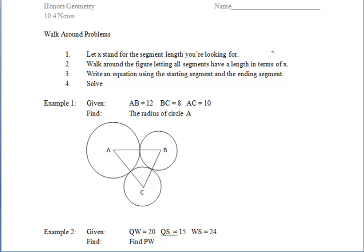In the second set of notes on section 10.4, we will be discussing two different types of problems. The first problem is called the walk-around problem, and the second is called the common tangent problem. For both these problems, it is extremely important that you memorize the given steps in order to sufficiently and effectively work out the problem. Let's start off with the first example.